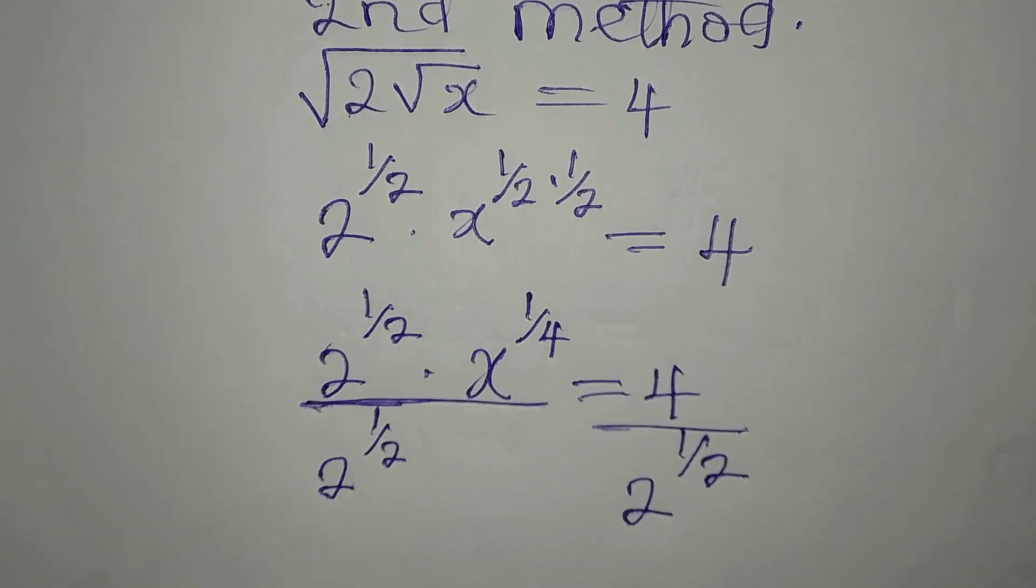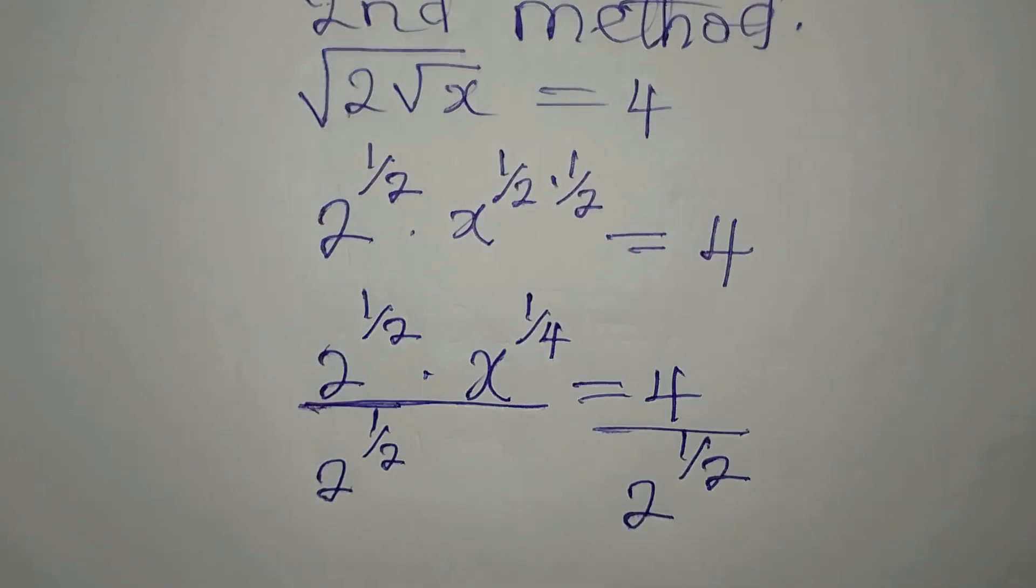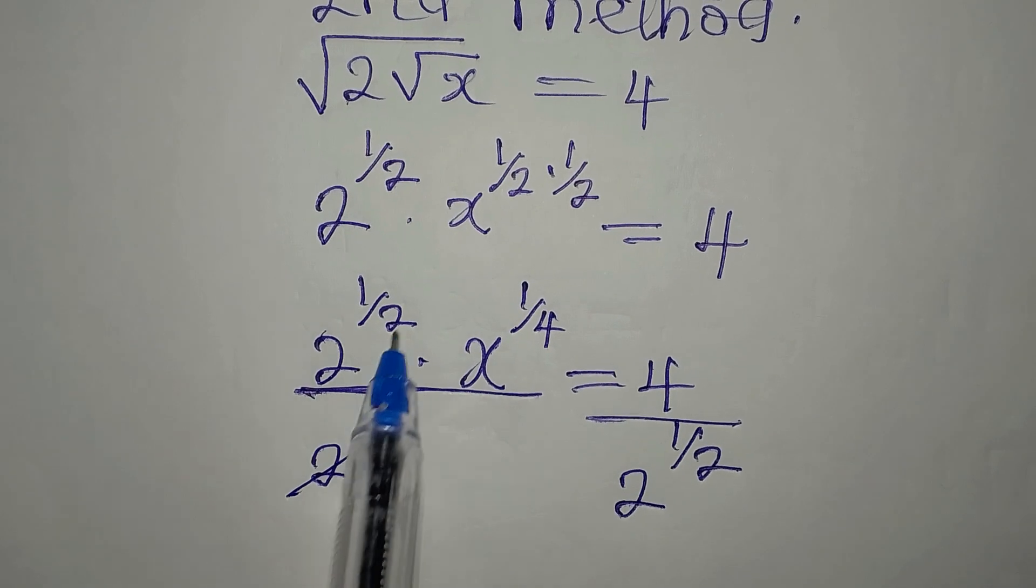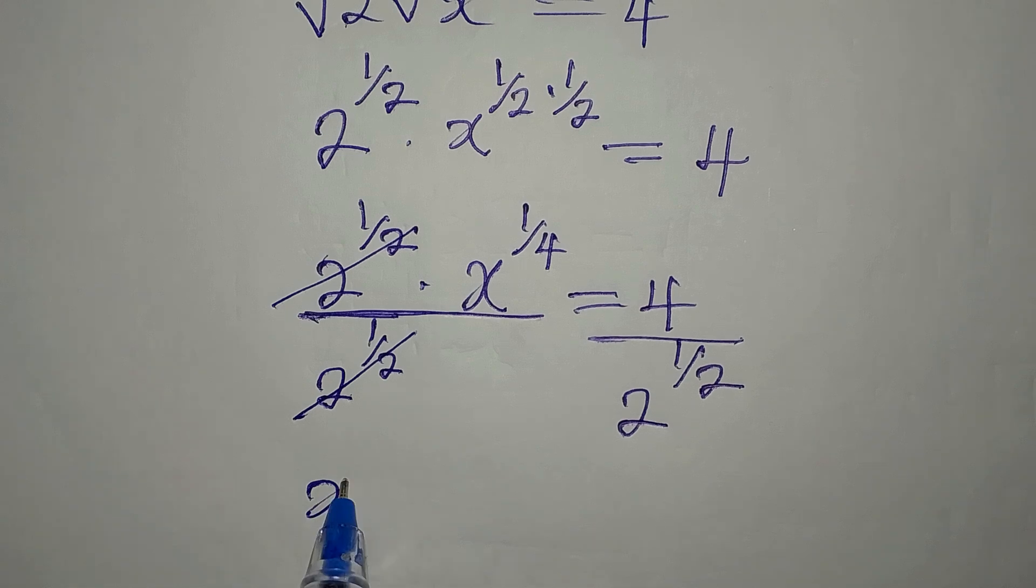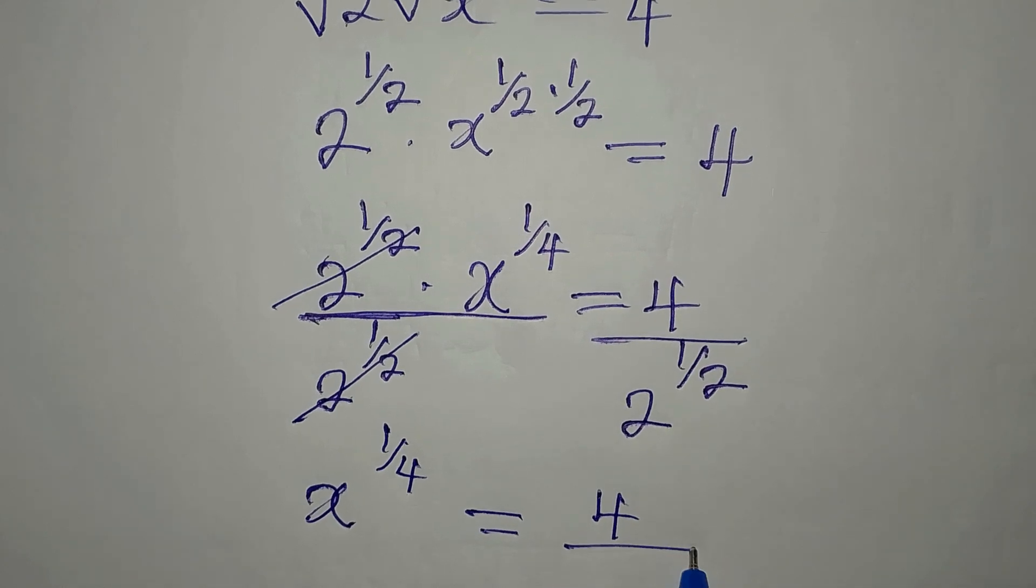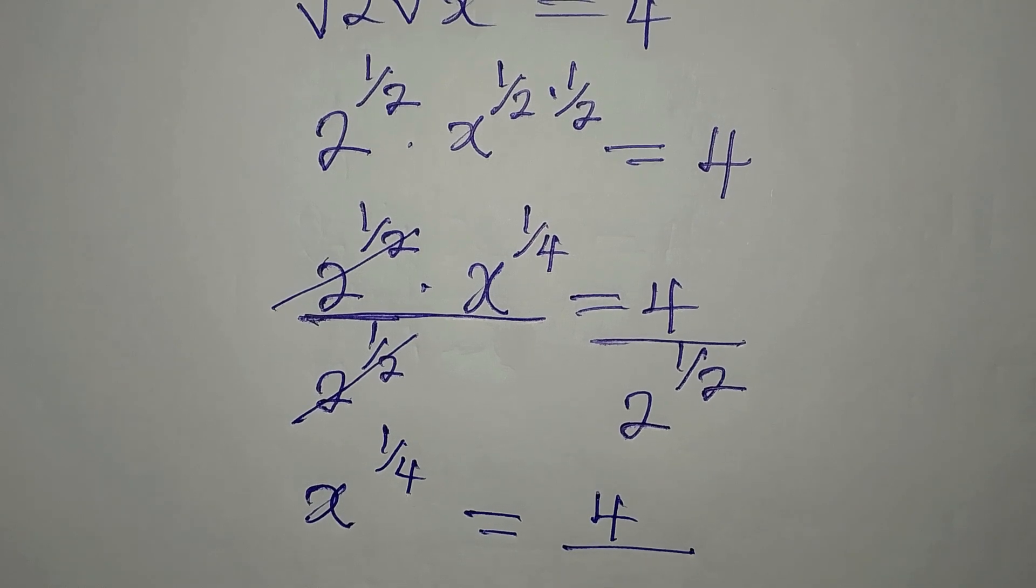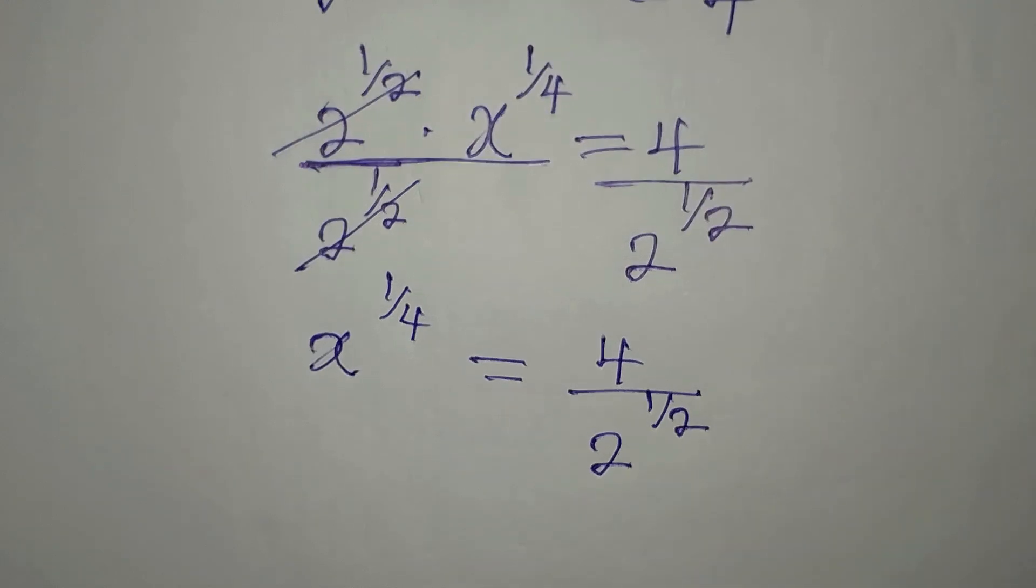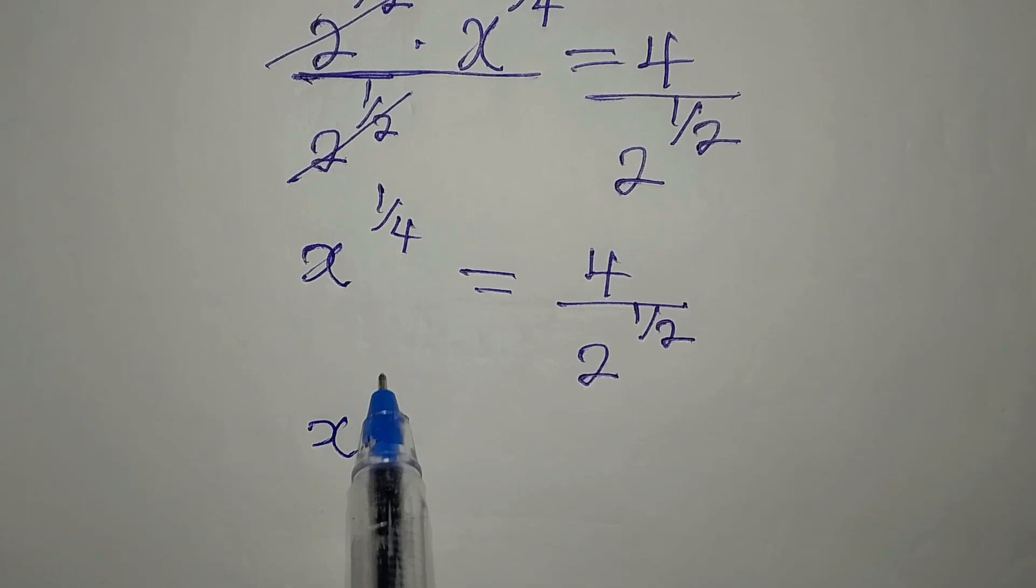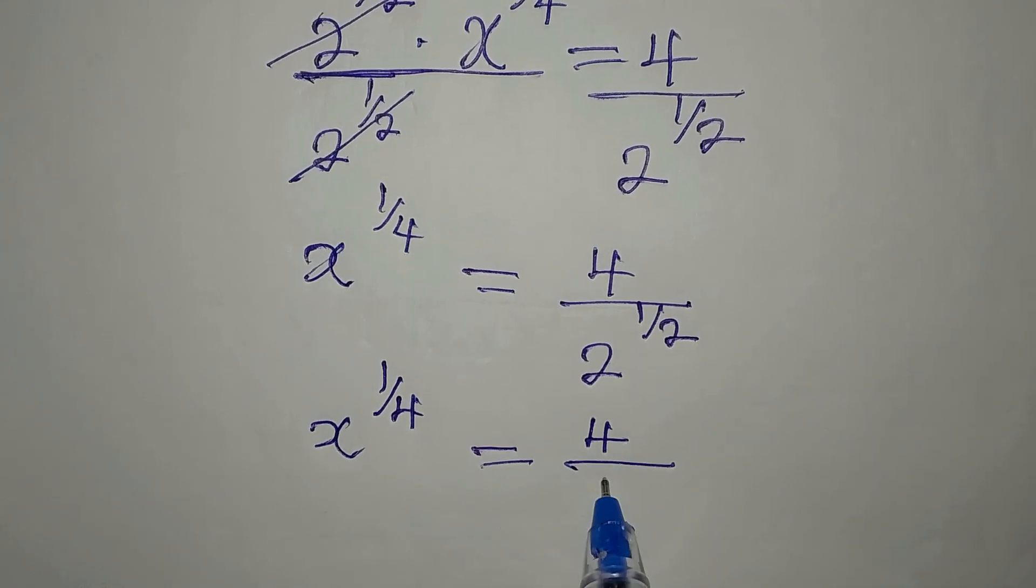Now, this is considered 1 term. 2 to the power of 1 over 2 times x to the power of 1 over 4 is 1 term. So if you divide this by 2, do not divide this again. This goes with this. And we'll have x to the power of 1 over 4 to be equal to 4 over 2 to the power of 1 over 2. Now, there's something I would like to address here very quickly. This is x to the power of 1 over 4 equals, this is the same as 4 over square root of 2.